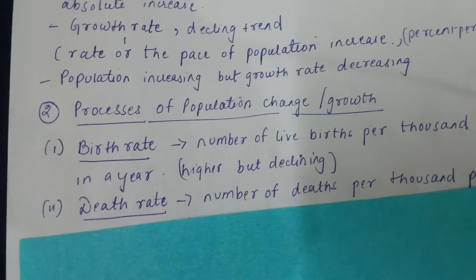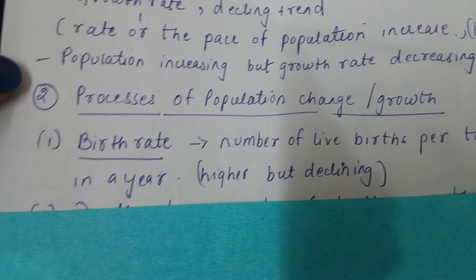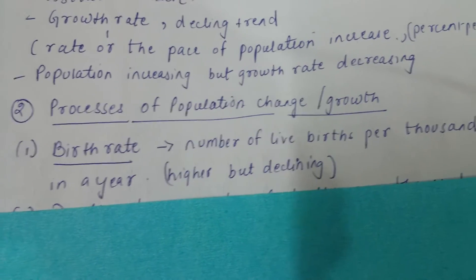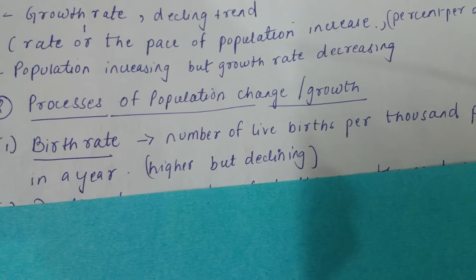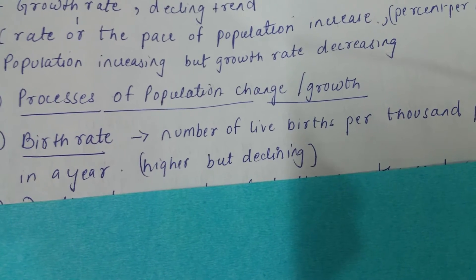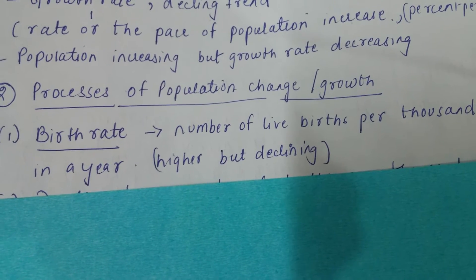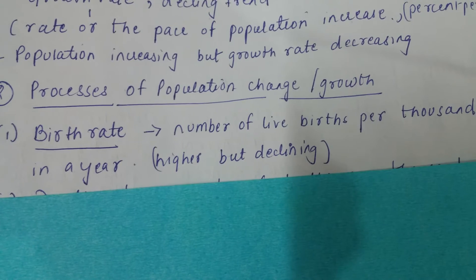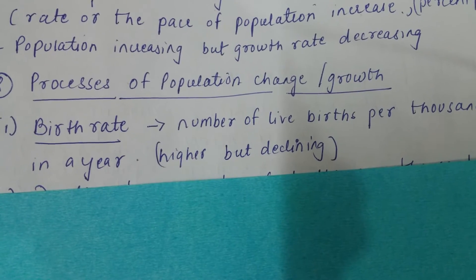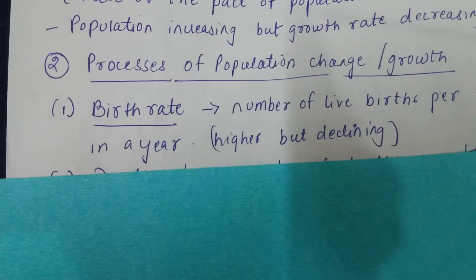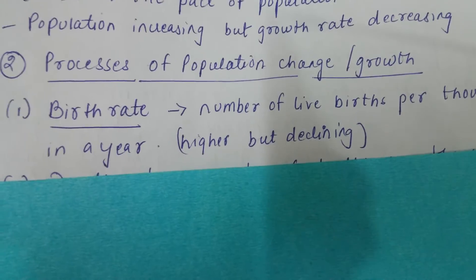When we talk about birth in geography, we use the term birth rate. Birth rate is the number of live births per thousand persons in a year — out of every thousand persons, how many live births take place. The birth rate is always very high; it is declining, similar to how population growth rate is declining, but the decline is not very noticeable.